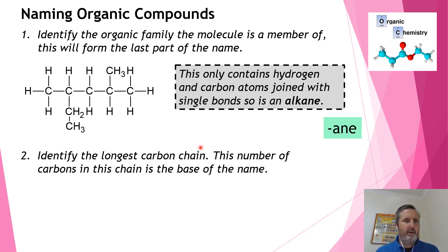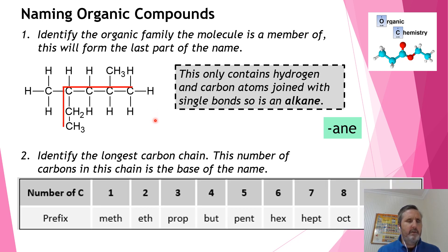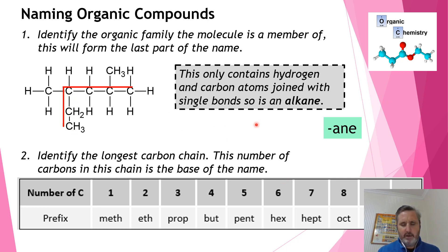The second thing is to identify the longest continuous chain in this molecule. If I went straight across horizontally I would have one, two, three, four, five carbons in a line — but that's not the longest. If I start at the bottom and go up and across, that gives me six, and that is the longest chain. Knowing that six is the longest chain, I can identify the base name.